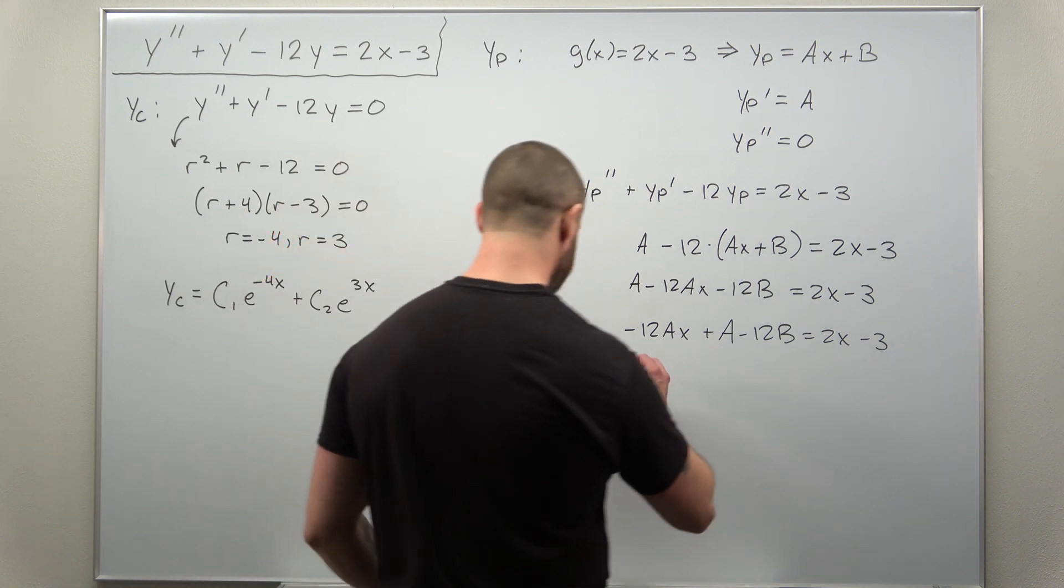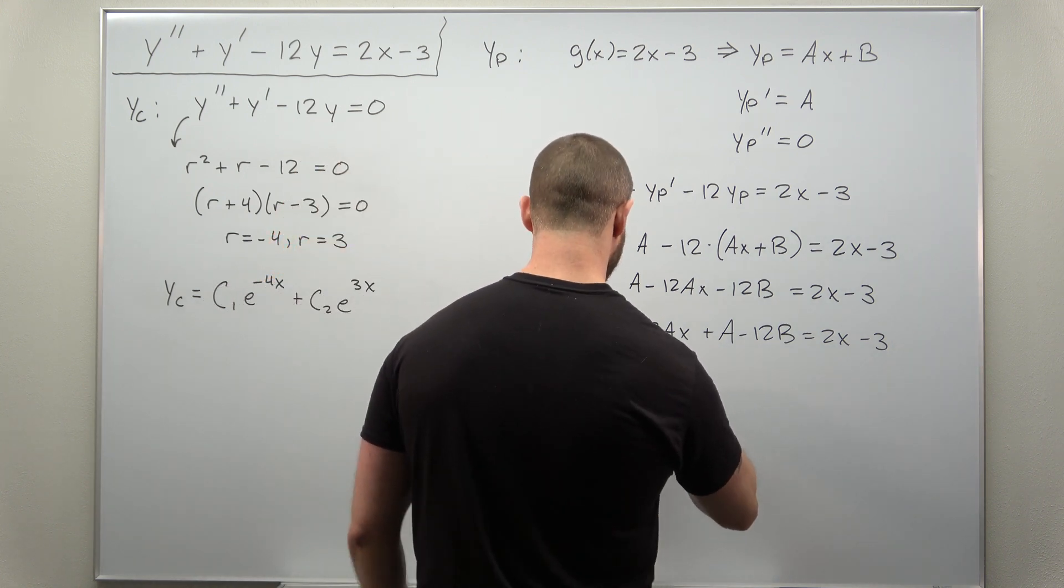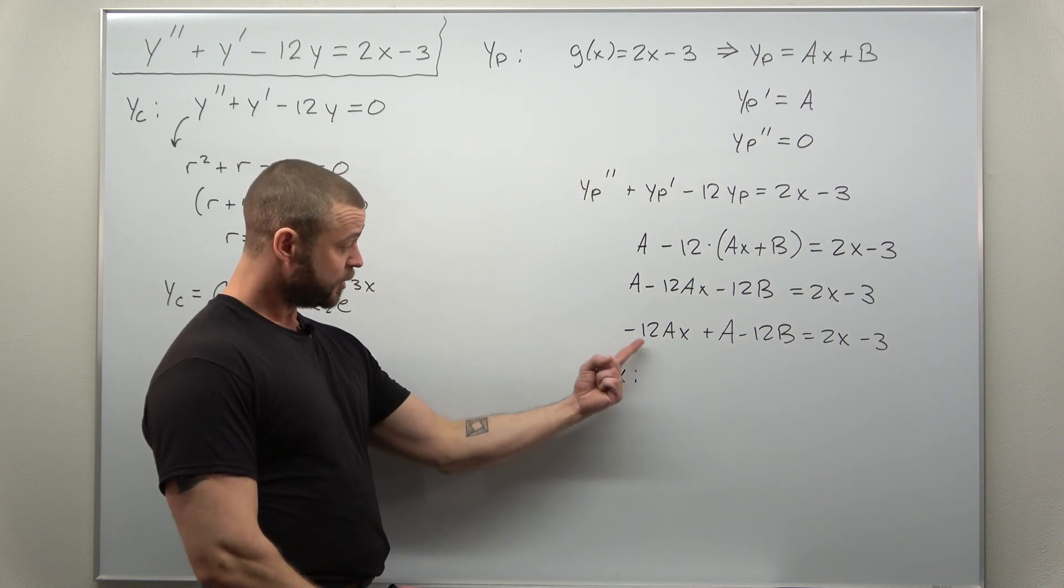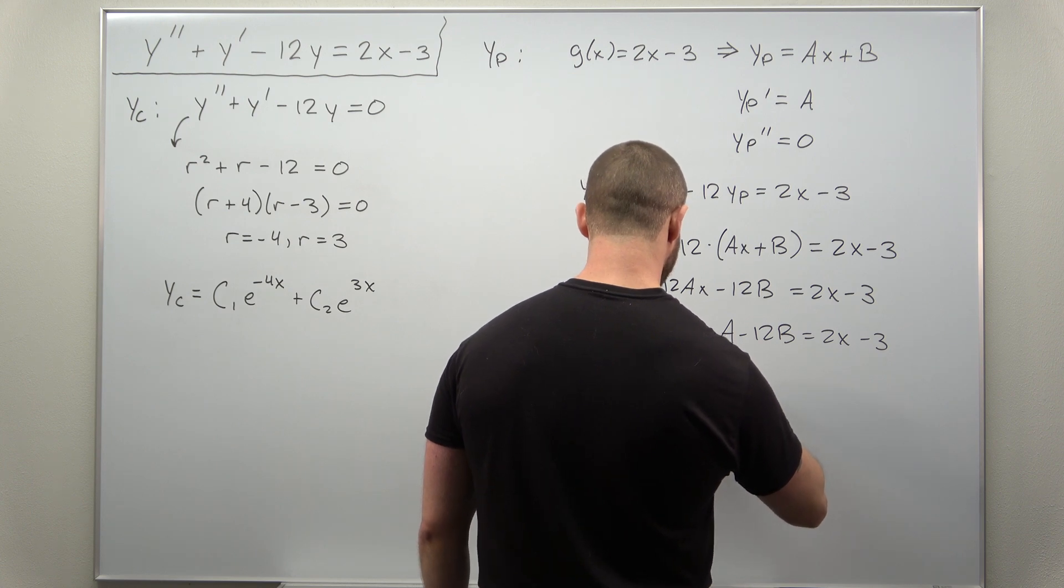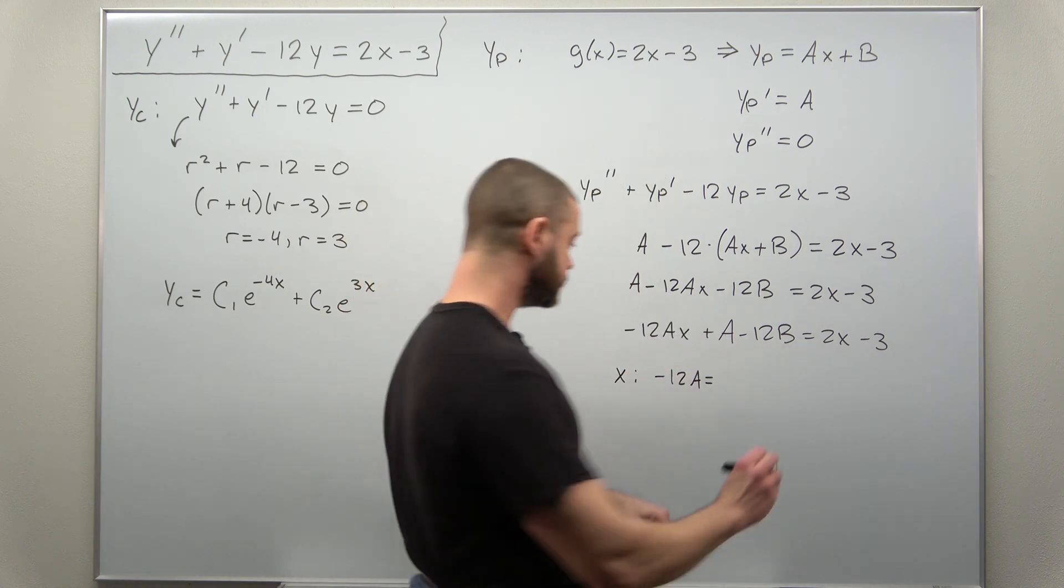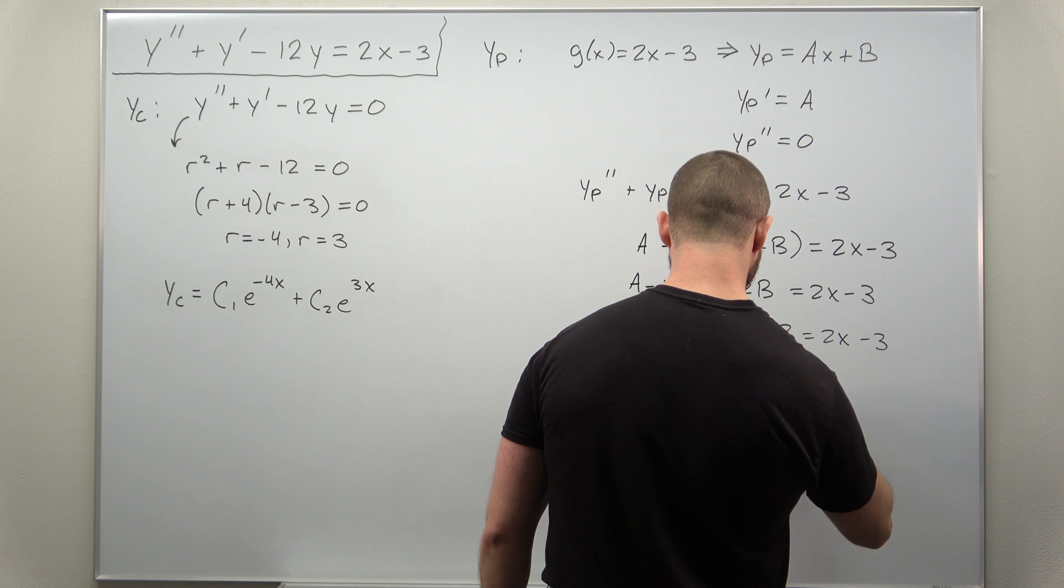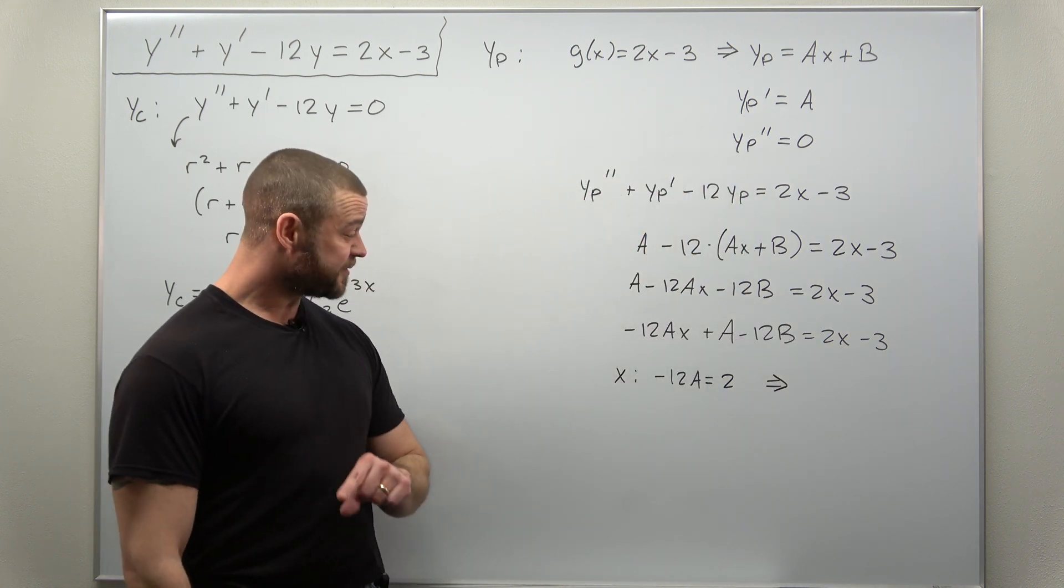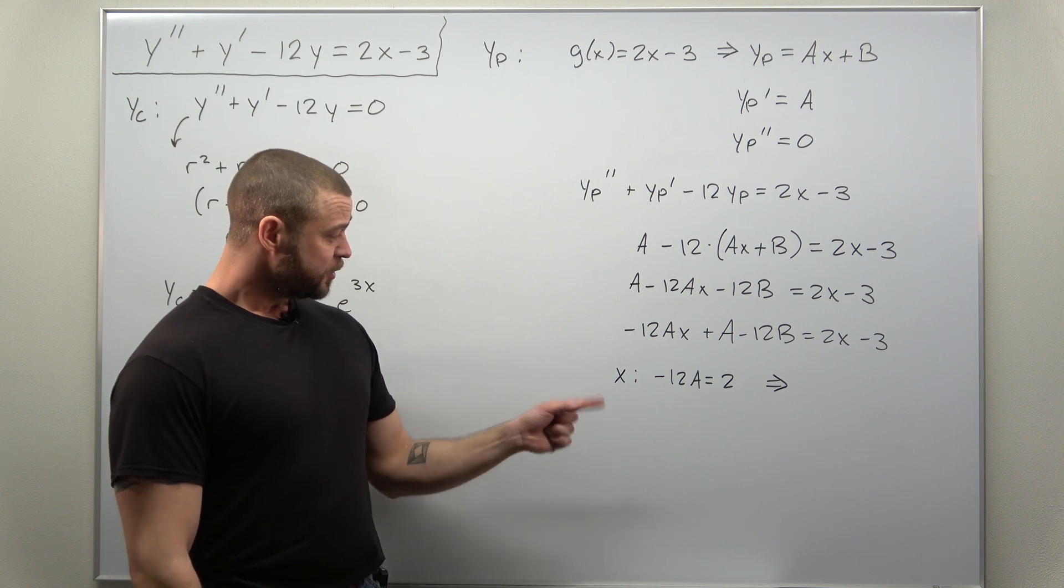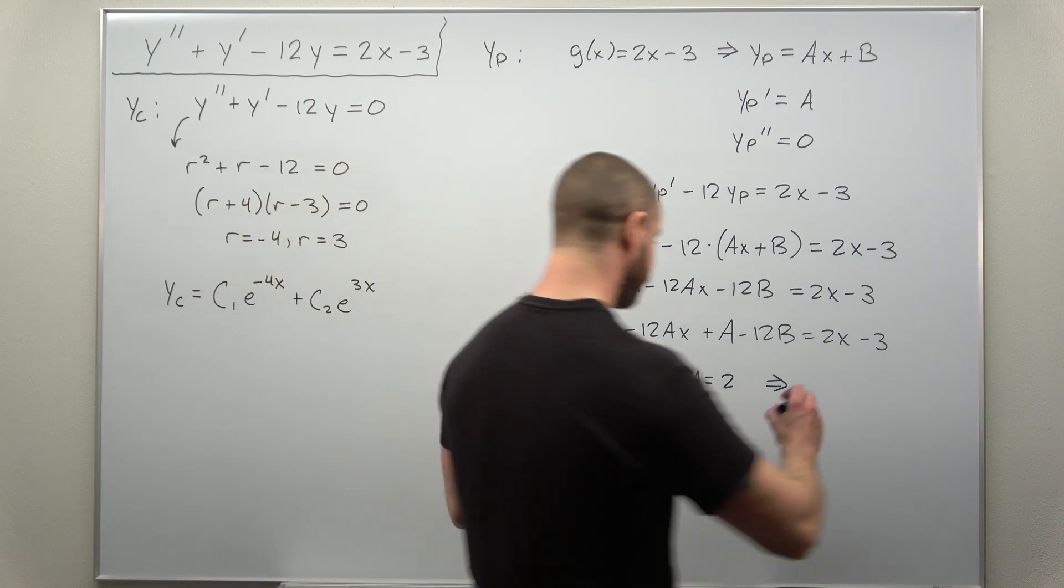So our first equation, by equating x's on both sides, we get negative 12a equals 2. And you can solve that very easily for the value of a. Looks like a comes out to negative one-sixth.